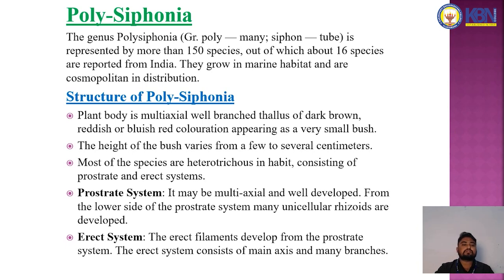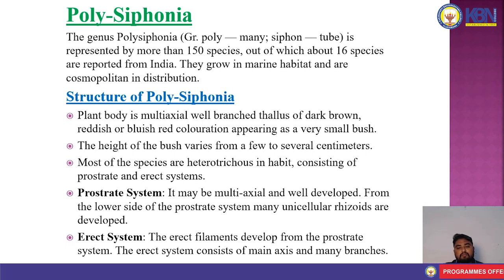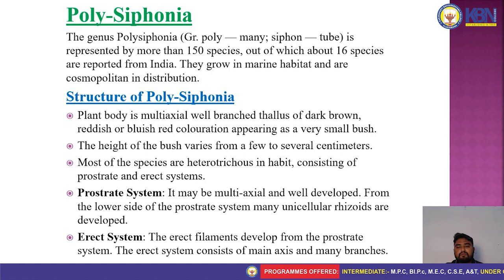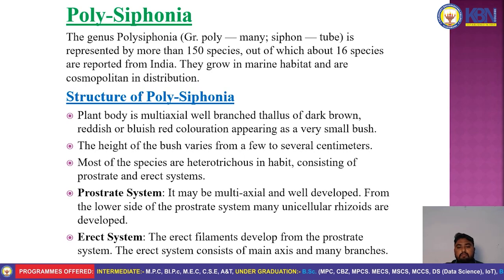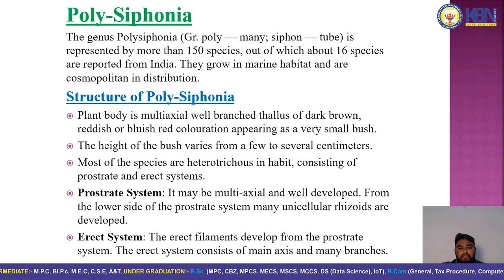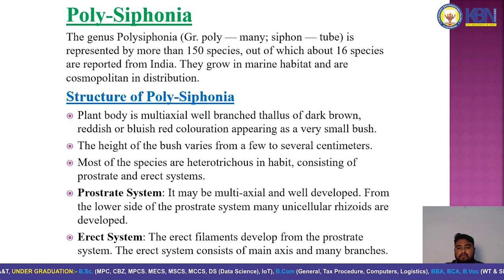The structure of Polysiphonia: the plant body is multi-axial, well-branched, with a thallus of dark brown, reddish, or bluish-red coloration appearing as a very small bush. The height varies from a few to several centimeters. Most species are heterotrichous, consisting of prostrate and erect stems. The prostrate stem may be multi-axial and well-developed. From the lower side, many uniseriate rhizoids are developed. The erect system consists of a main axis and many branches.